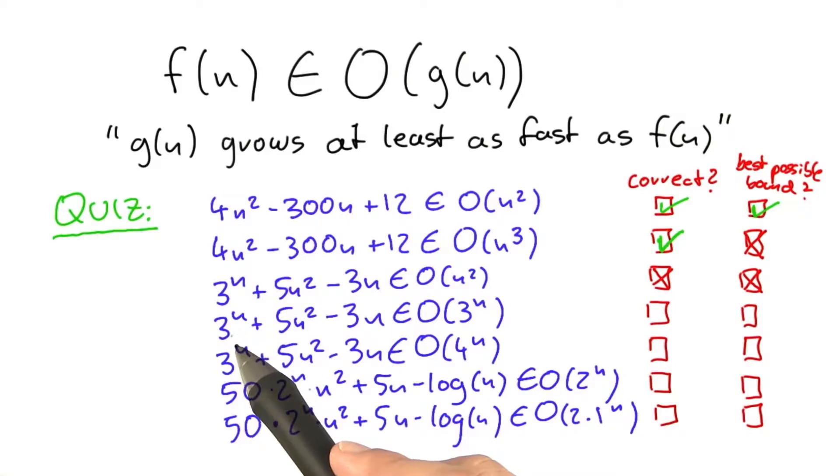In the next one, 3 to the power of n is the fastest growing term. And this is exactly what we're stating on the right here. So it's correct. And it's also the best possible bound that we can give.